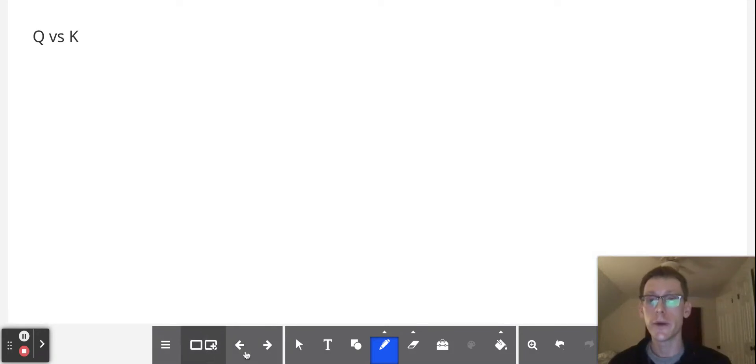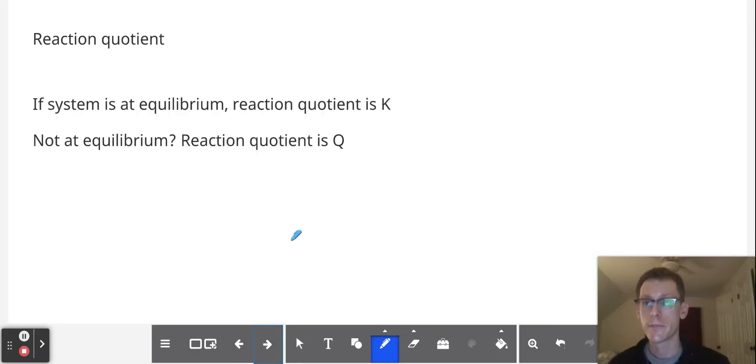In this video, we're going to learn about Q and how it relates to K. So let's talk first about reaction quotient. K is based on the reaction quotient, so what we know about products over reactants, that is equal to K.